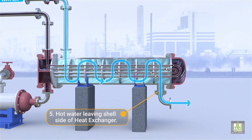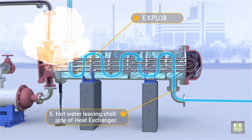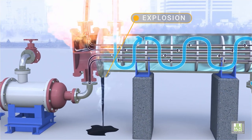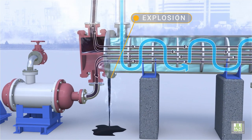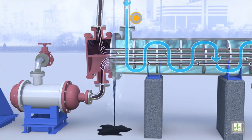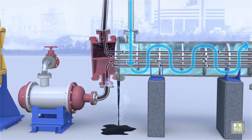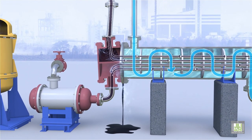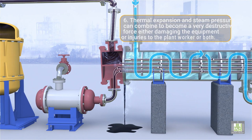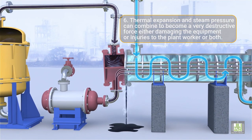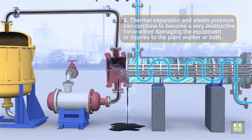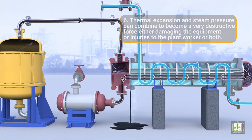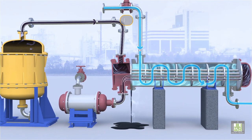The heat exchanger is typically provided with low or high point vents to remove water from tubes or the shell. Uncontrolled mixing of water with hydrocarbons can generate high pressure conditions and can damage systems that are not equipped with pressure relief devices. Thermal expansion and steam pressure can combine to become a very destructive force, either damaging the equipment or causing injuries to the plant worker, or both.